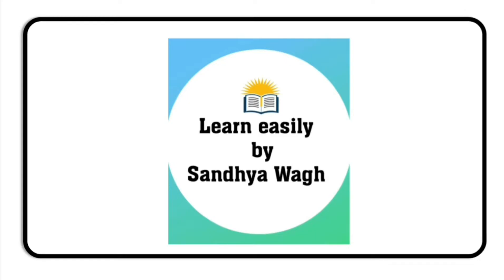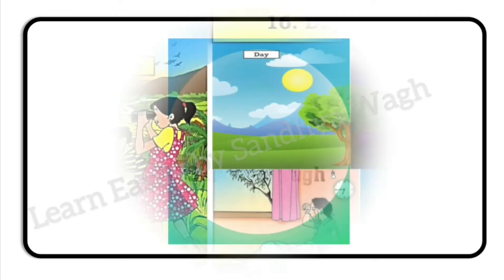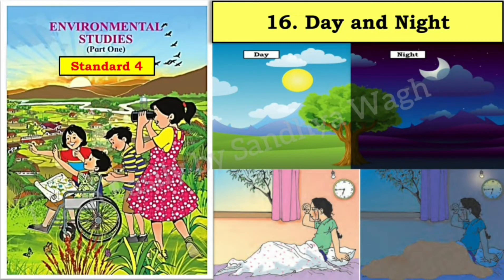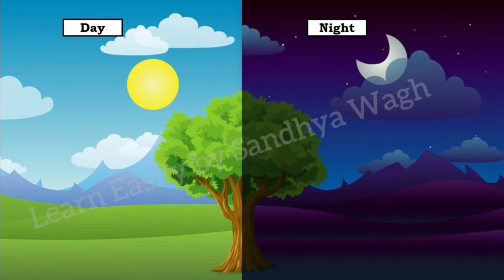Hello dear students, today we are going to learn and understand a very interesting lesson from the environmental studies textbook, standard 4. The lesson's name is Day and Night. When we see the sun in the sky, we say that it is day, and when we see the moon in the sky, we say that it is night.